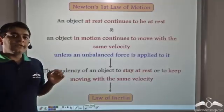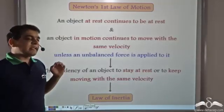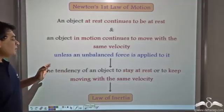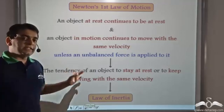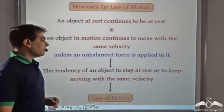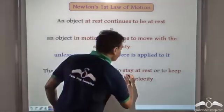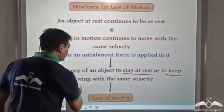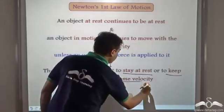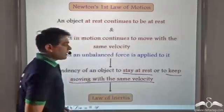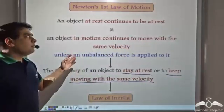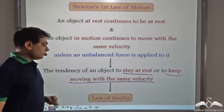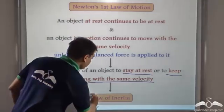So Newton's first law of motion can be interpreted in terms of the tendency of an object to stay at rest or to keep moving with the same velocity. And hence Newton's first law is also known as the law of inertia.